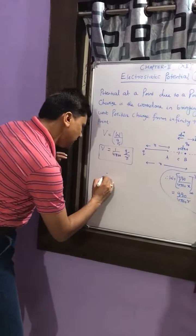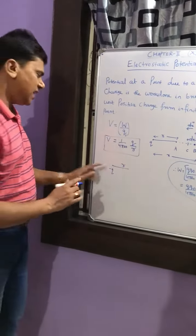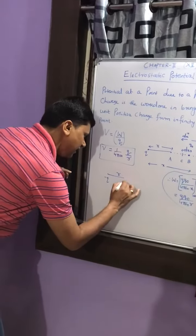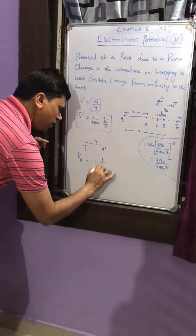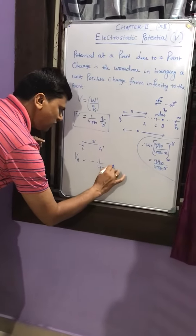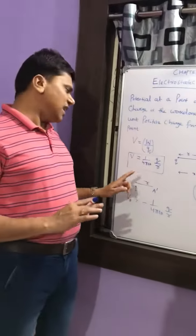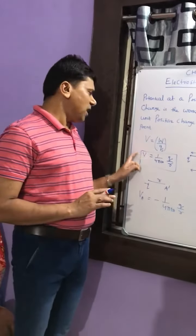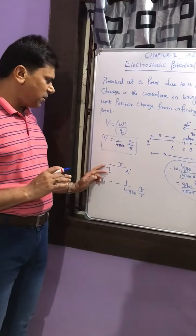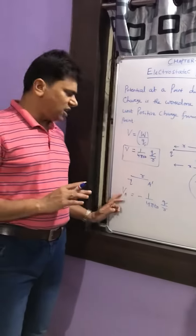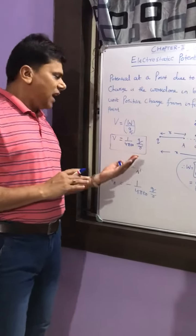Suppose we have a charge minus q and we find the potential at distance r — it will be equal to minus 1 by 4πε₀ times q by r. Since potential is a scalar quantity, for plus q the potential will be positive, and for minus q the potential will be negative.